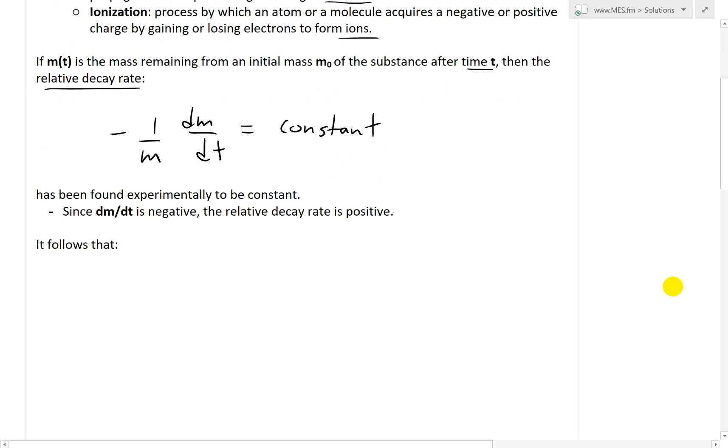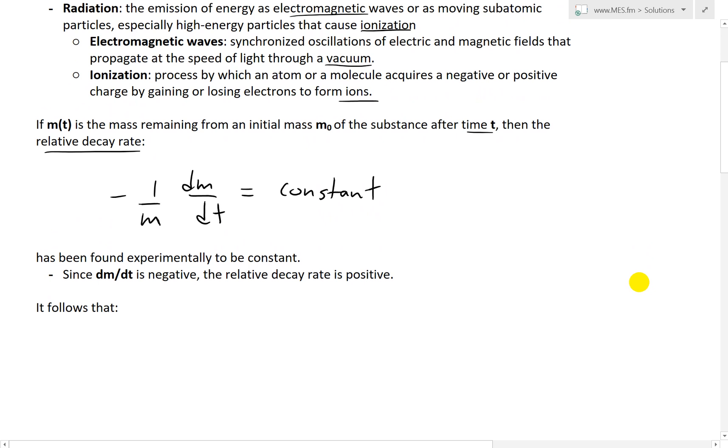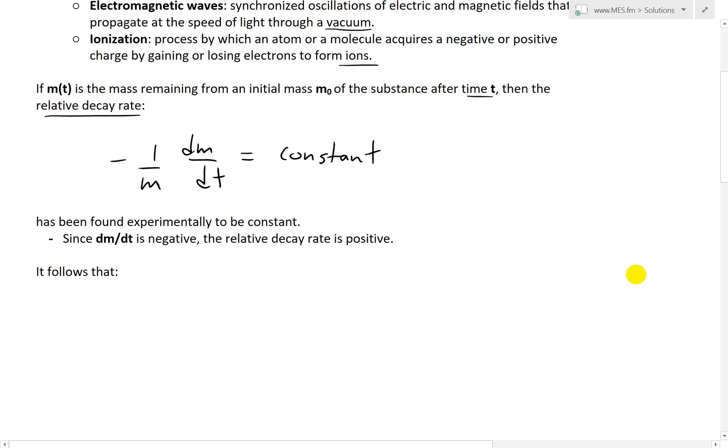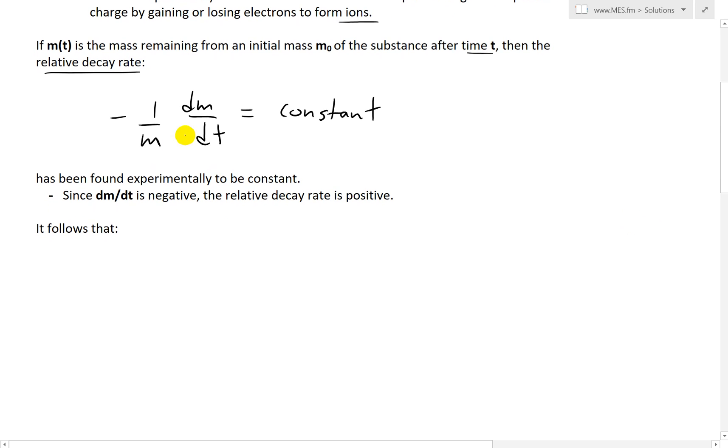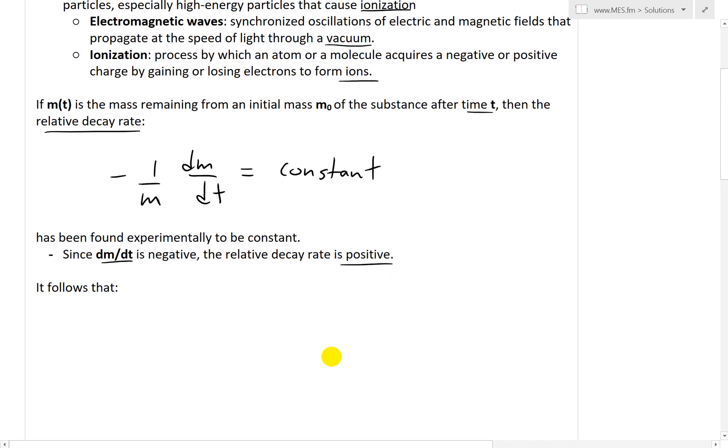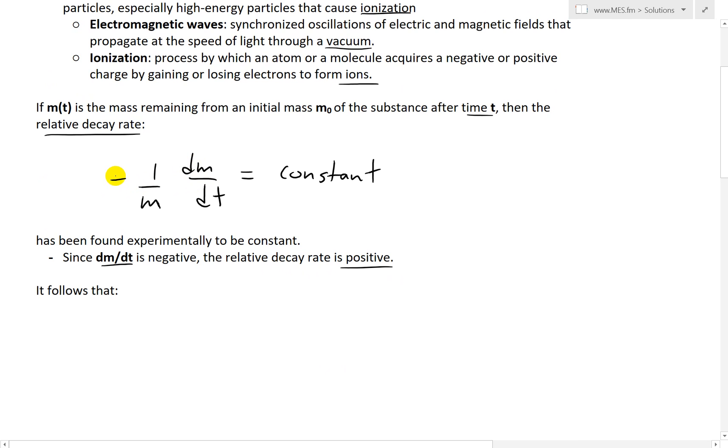Here I just wrote that down. It has been found experimentally to be constant. This relative decay rate of a radioactive substance has been experimentally shown to be constant. Since the decay rate dm/dt is negative because it's decreasing the amount of mass in decay, then the relative decay rate is positive. If this is negative, there's a negative already there, so that just becomes positive.